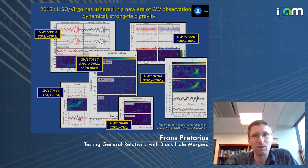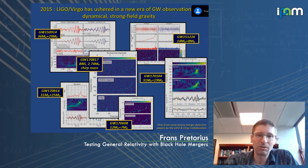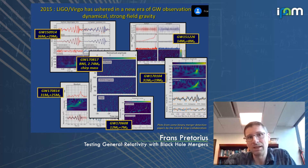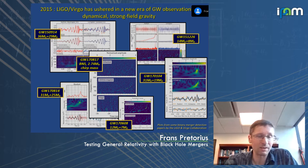LIGO has ushered in the era of observational strong-field gravity, with detections now of many candidate binary black hole mergers and at least one binary neutron star merger. The difference with LIGO observations is that now there's actually enough information in these signals that we can start quantifying consistency with the general relativity hypothesis — that these are Kerr black holes that are colliding and forming other Kerr black holes.